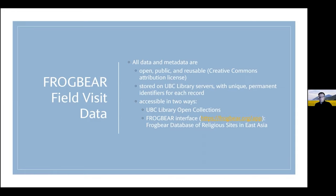It's all stored on UBC library servers, which means there are stable and unique identifiers for each record. So if you want to cite it, there's a very clear URL that will not change as long as the UBC library continues to exist. All this material can be accessed in two different ways: one is through the UBC library itself, and the other is through a website that FrogBear has created called the FrogBear Database of Religious Sites in East Asia, which you can access at frogbear.org.